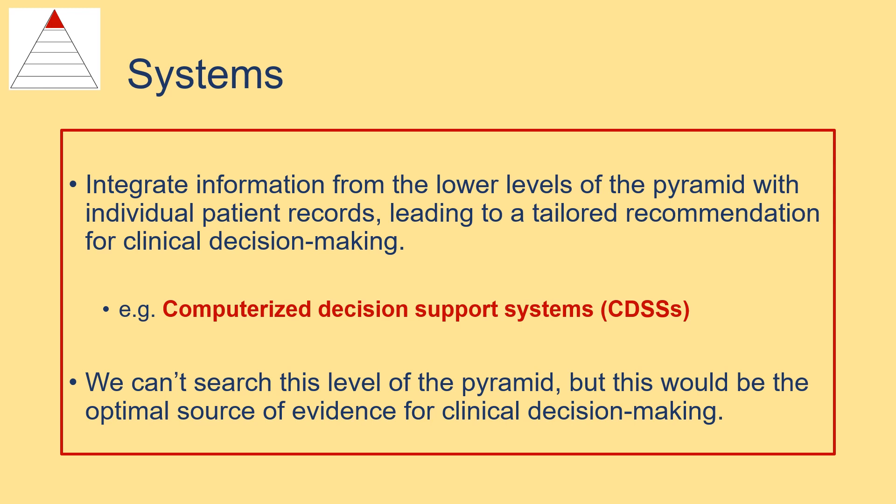Finally, at the top of the 6S Pyramid, we find systems. Systems are computerized decision support systems that integrate an individual patient's electronic health record with evidence from all the lower levels of the pyramid, leading to a tailored clinical recommendation for a specific patient. Systems are not widely available, but even if they were, there would be issues that would prevent us from using them for EIDM research, such as privacy, access, patient specificity, and so on. Although we can't use systems when conducting EIDM research, this would be the optimal source of evidence for clinical decision making.